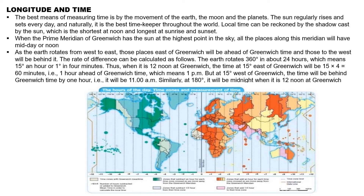When it is noon at Greenwich, the time at 15 degrees east will be 1 hour ahead. Places to the west will be behind Greenwich time. Going to the opposite side of the globe, we reach 12 hours difference. In this way, each 15 degrees of longitude corresponds to a difference of 1 hour.